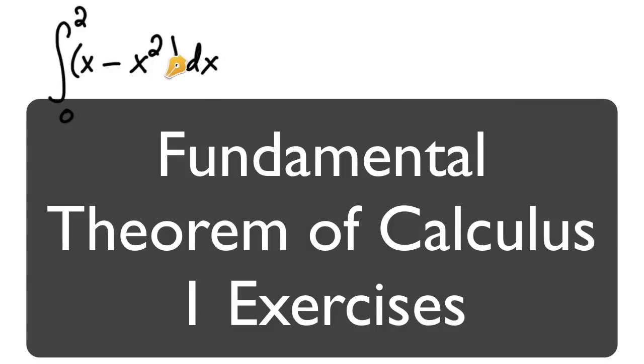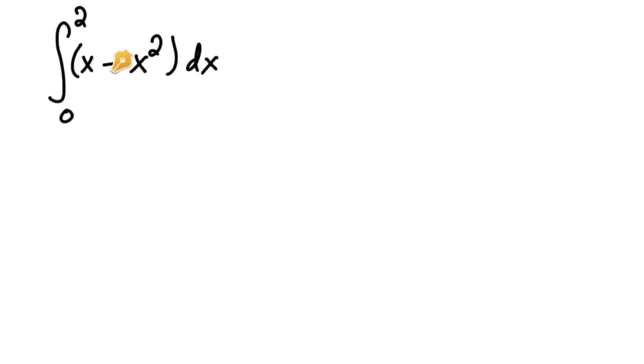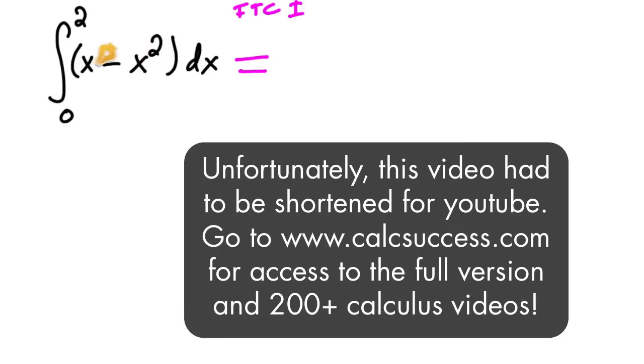We want to find the integral from 0 to 2 of x minus x squared. Using the Fundamental Theorem of Calculus part 1, which says find the antiderivative: x squared over 2 minus x cubed over 3, just using the backwards power rule.